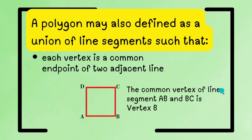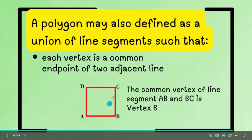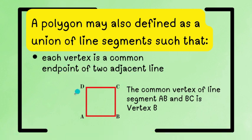Ang common vertex ng line AB at saka line BC ay ang point B. So, ang common vertex naman ng DC at saka CB ay ang point C. Ang CD at saka DA, ang point D at saka DA and AB ay ang point A. So, ibig sabihin, it can be a polygon because each vertex is a common endpoint of two adjacent lines.